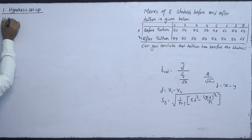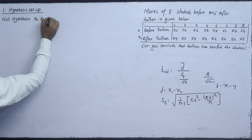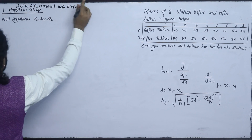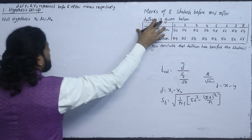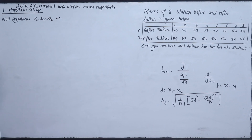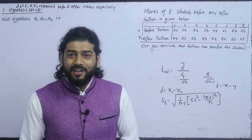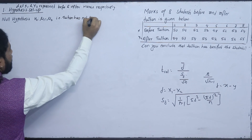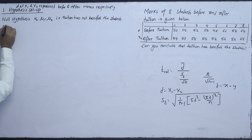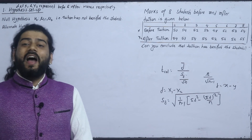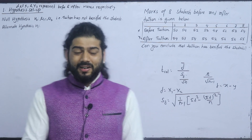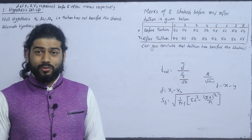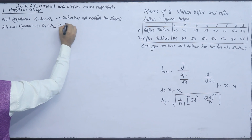First, null hypothesis: H0: μ1 = μ2. Let x1 and x2 represent before and after marks respectively. That is, tuition has not benefited. Alternately: μ1 < μ2 — meaning before marks are less than after marks, which means the student has been benefited by tuition.